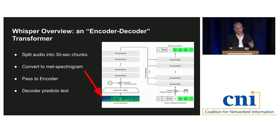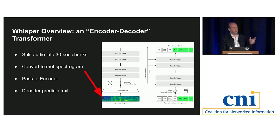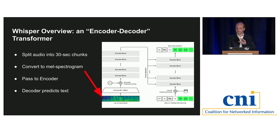Whisper is basically an encoder-decoder transformer — there will be no tests on these network architecture diagrams. One interesting thing is how much of our analysis nowadays happens on images. That strange blue and green square in the diagram is a MEL spectrogram. Our tools for analyzing image data have become so sophisticated that we turn everything we're looking at, including sound, into a PNG file and then analyze that.